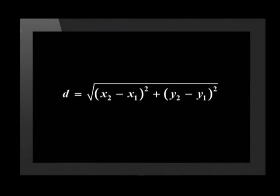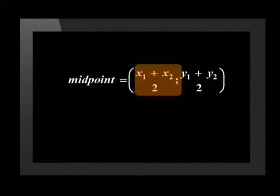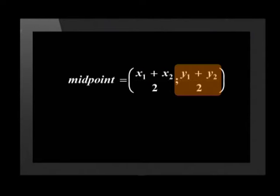Let's move on to the distance and midpoint formulae. Distance equals the square root of x2 minus x1 squared plus y2 minus y1 squared. Midpoint equals x1 plus x2 divided by 2 and y1 plus y2 divided by 2.